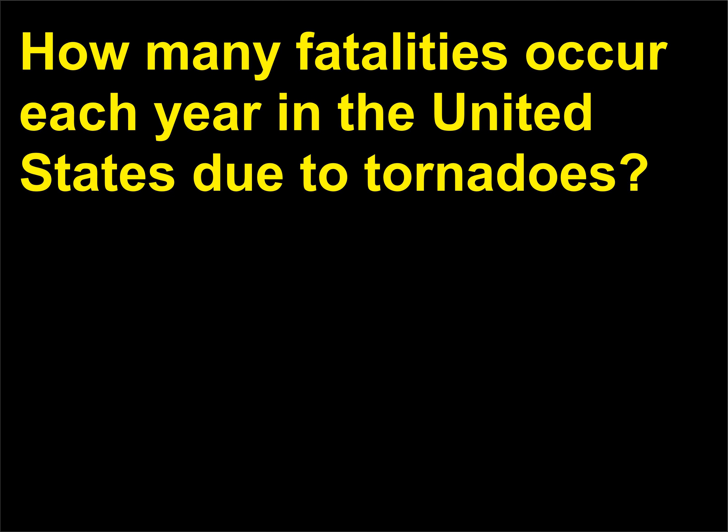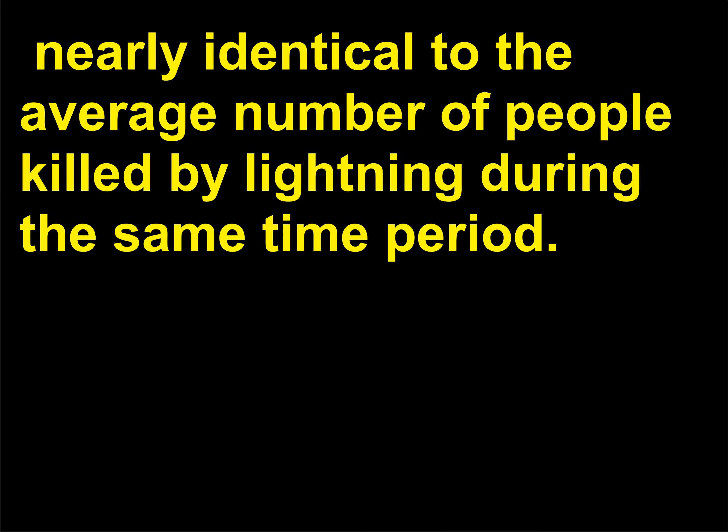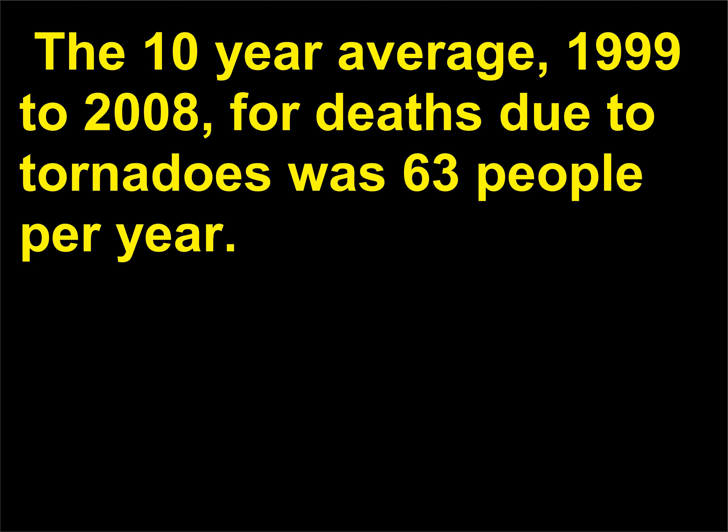How many fatalities occur each year in the United States due to tornadoes? During the past 30 years (1979–2008), an average of 57 people were killed each year by tornadoes — nearly identical to the average number killed by lightning during the same period. The 10-year average (1999–2008) for deaths due to tornadoes was 63 people per year.